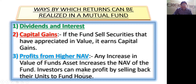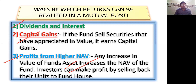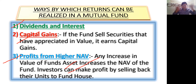Ways by which returns can be realized in mutual funds: first, dividend and interest; second, capital gains — if the fund sells securities that have appreciated in value, it earns capital gains; third, profits from higher NAV — any increase in value of the fund's assets increases the NAV, and investors can make profit by selling units back to the fund house.